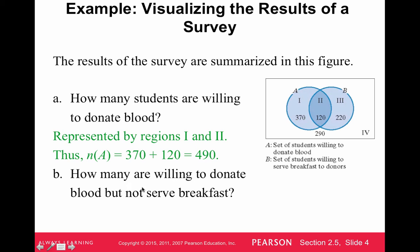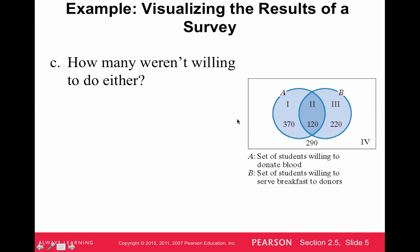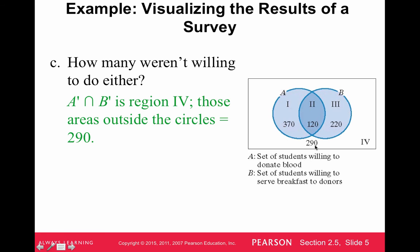Question B asks: how many are willing to donate blood but not serve breakfast? Willing to donate blood but not serve breakfast is the 370 — the people in circle A but not in circle B. So the answer is 370. Next, how many weren't willing to do either? That's students in neither circle, so that's the 290.